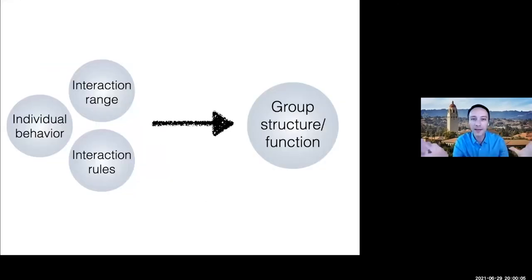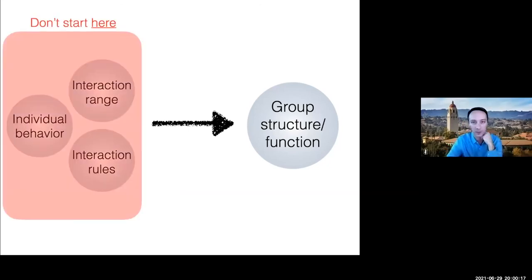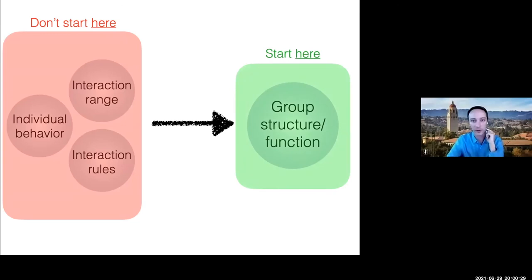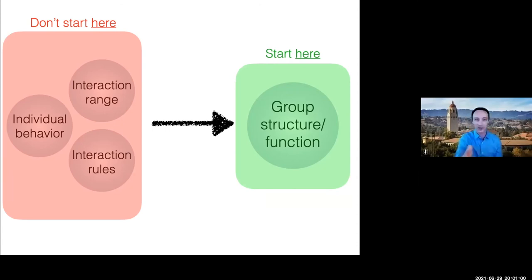The big idea — if you come away with one thing from this talk — is that for attacking the collective movement problem, the tendency has been to start at a low level and think about what ingredients should go into a model. I think we're not at that stage yet; we should be working primarily at the group level. My reasoning is that science has done this before: we knew a lot about how materials worked before we ever knew about atoms. The thermodynamics came before the statistical mechanics. I think we've been trying to jump to the end answer too quickly.